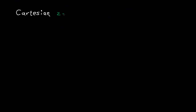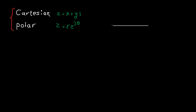For Cartesian, we have x plus y j. For polar, we have r e to the power of j theta. If you go with Cartesian representation, here is the point — real part and imaginary part.